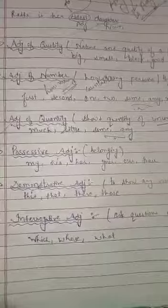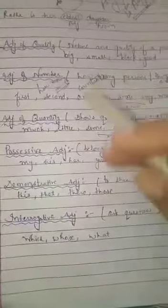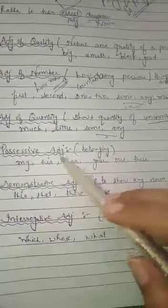Next are possessive adjectives which tell about the belonging of anything. We can tell that whose anything is there. For example, if there is any pen, if I ask whose pen is that, then if I say this is my pen, this is his pen, this is her pen. So that is called adjective of possession, possessive adjective.